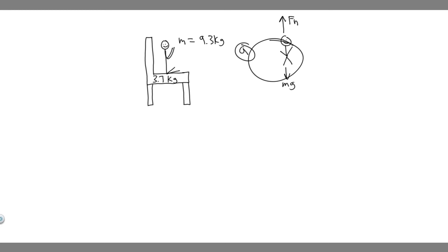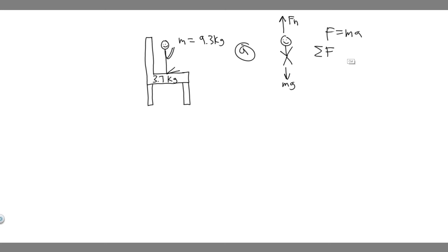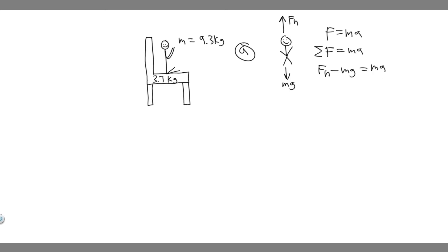This is going to be the free body diagram, and what we want to do is find F sub N. We do it by taking the sum of the forces in the y direction, because that's the direction we're focusing on. We know force equals mass times acceleration, and net force is found by taking the sum of the forces. So the sum of the forces equals mass times acceleration. We have two forces: F sub N and mg. F sub N is positive because it goes upward, and minus mg because mg goes downward. This equals mass times acceleration, which is zero since the object is standing still. So F sub N minus mg equals zero, meaning the normal force equals mg.